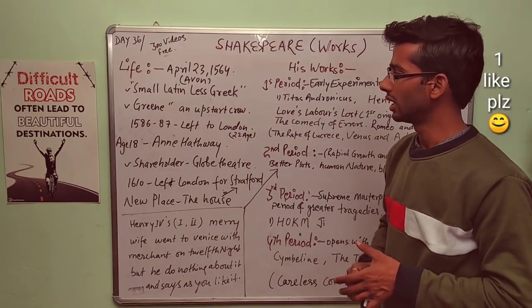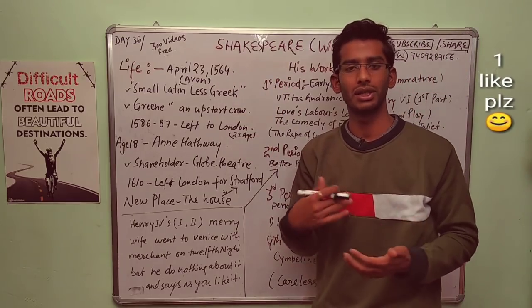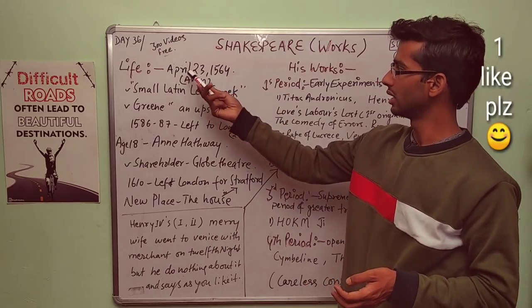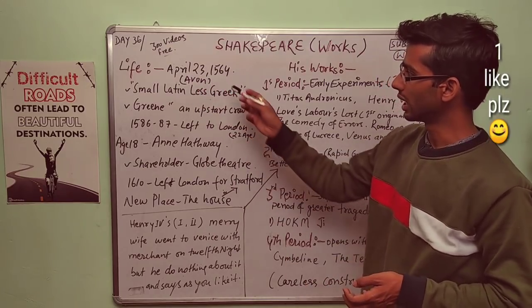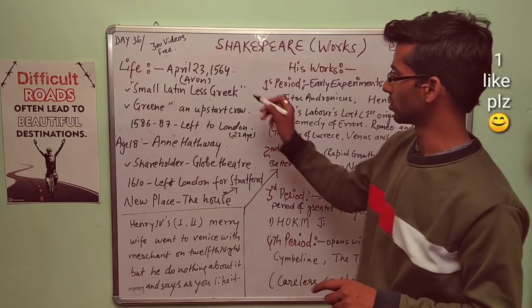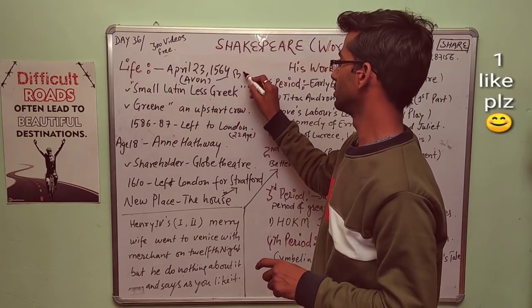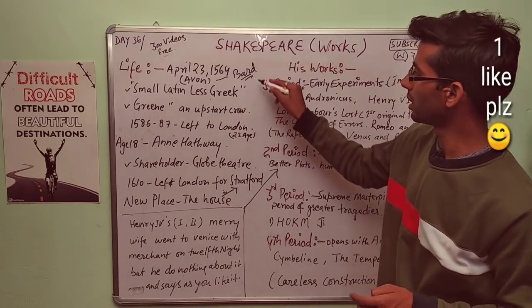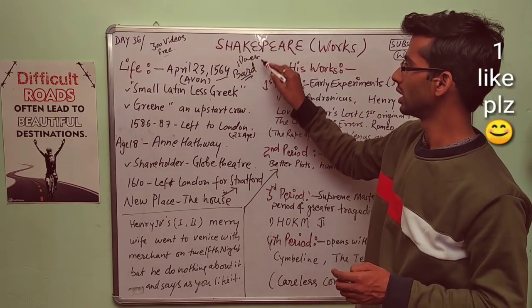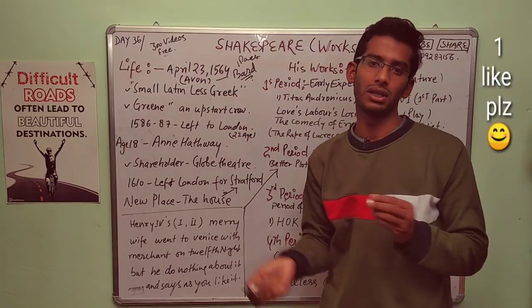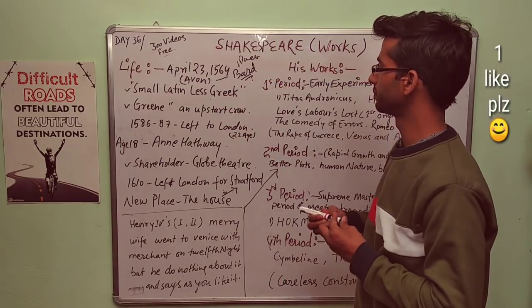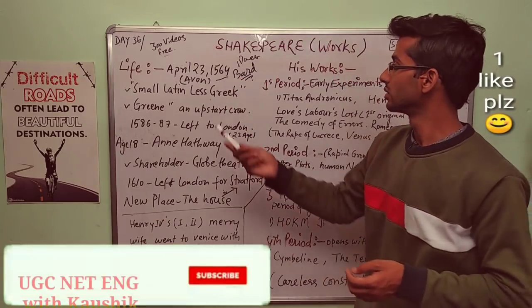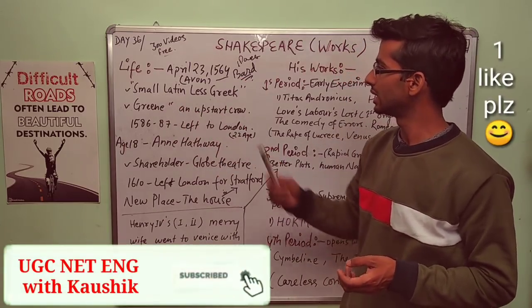Let's talk about his life and some important events. First, he was born on 23rd April 1564 in Avon. That's why he is called the Bard of Avon. This is a key point in the TGT exam. Bard of Avon means Avon is the place where he was born. Small Latin less Greek.